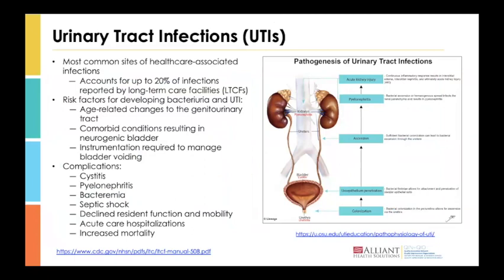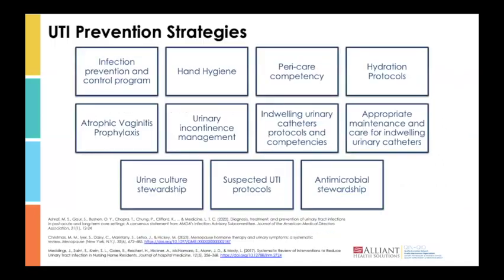Moving on to UTIs. UTIs are the most common site of healthcare-associated infections, accounting for up to 20% of infections in a long-term care facility. They have risk factors specific to the nursing home population related to age-related changes in the genitourinary tract and the presence of comorbid conditions. UTIs lead to significant complications, one of which is sepsis.